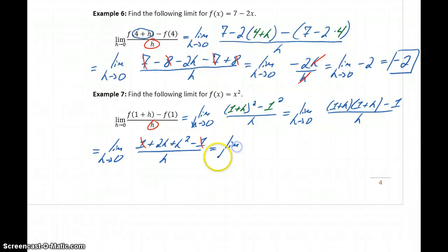Leaving us with the limit as h approaches 0 of 2h plus h squared over h. At this point, we still have the h in the denominator. We can't cancel that yet.